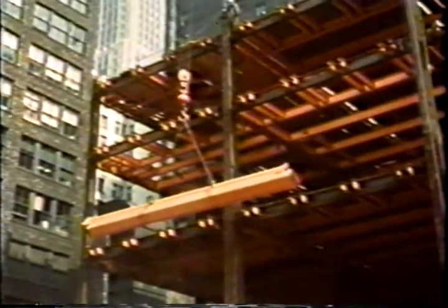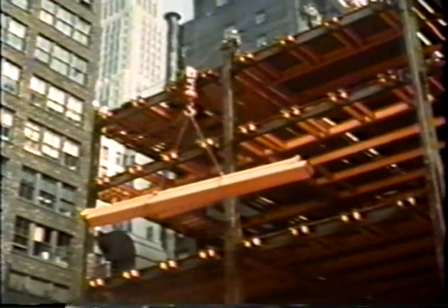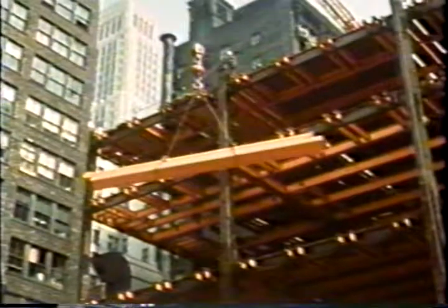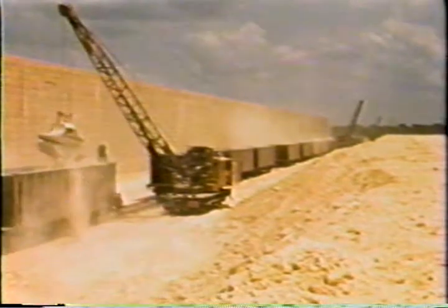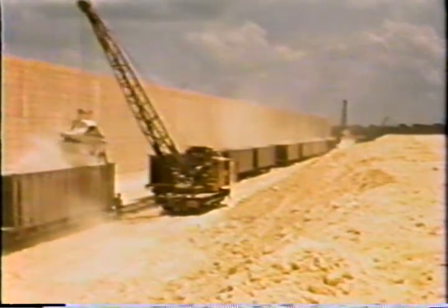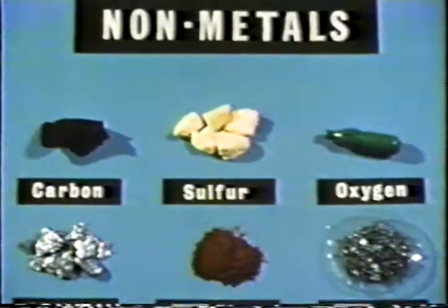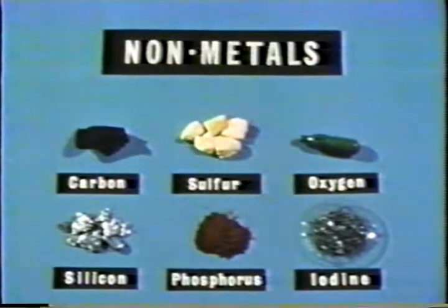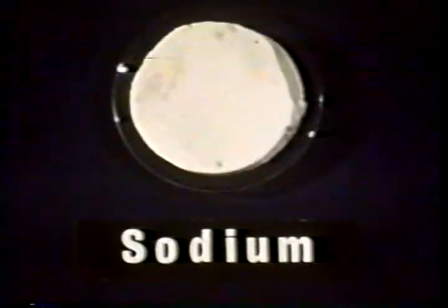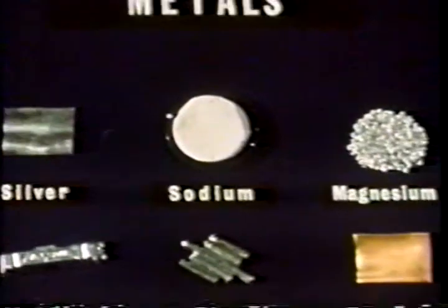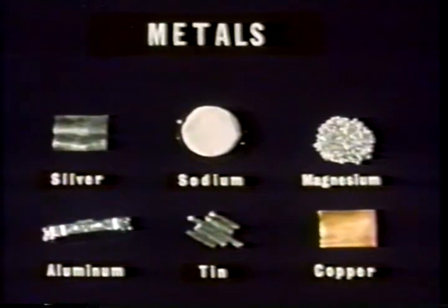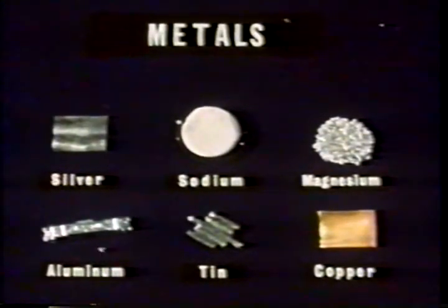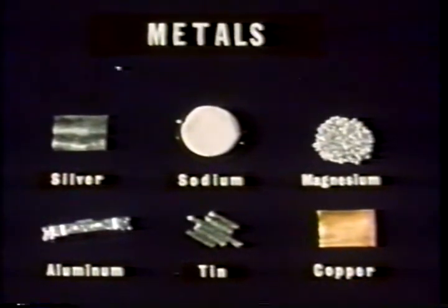En nuestro mundo físico hay metales como los que componen el acero y metaloides como el azufre. El azufre, el carbono, el oxígeno, el silicio, el fósforo y el iodo se encuentran entre los 22 elementos generalmente clasificados como metaloides. Otros elementos como el sodio, la plata, el magnesio, el aluminio, el estaño y el cobre se encuentran entre aquellos que componen los 81 elementos que generalmente se clasifican como metales.